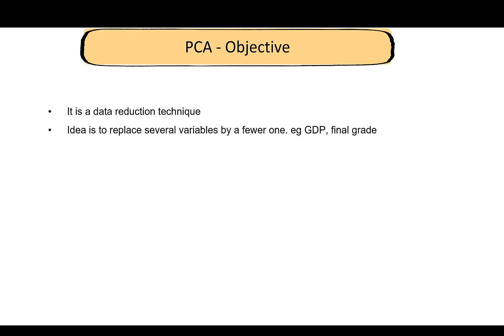If you think of a final grade, it is also a data reduction technique. Your final grade is built by replacing several variables—your grades in homeworks, assignments, quizzes, and exams—into one final number. So your final grade is obtained by some kind of data reduction technique.